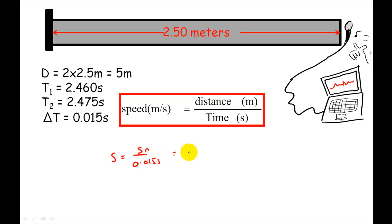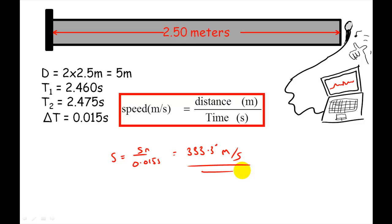The calculator gives me 333.333 recurring metres per second, which is a pretty good estimate for the speed of sound. Bear in mind that the speed of sound actually varies depending on where you are in the world, what altitude you are, and what temperature the air is — so this is definitely well within the acceptable limits. Thanks for watching, I hope you enjoyed it; if you have any questions or comments please leave them, and subscribe.